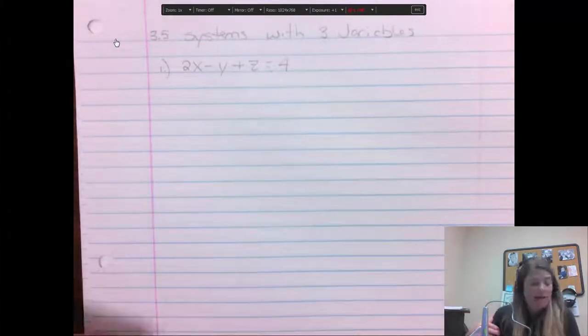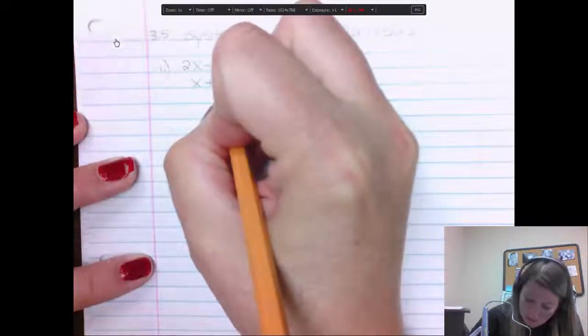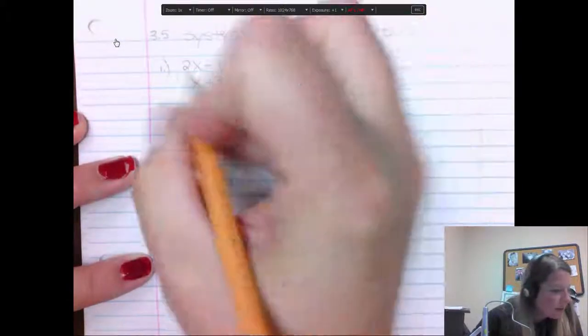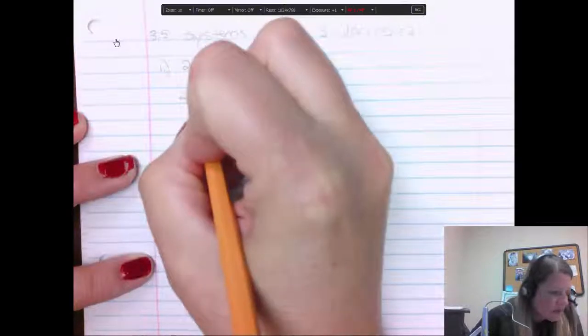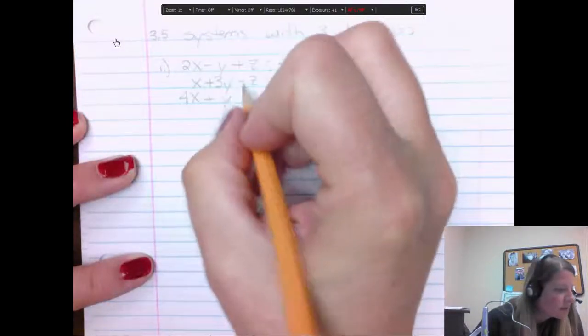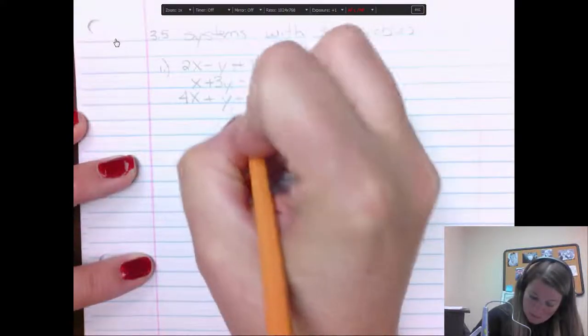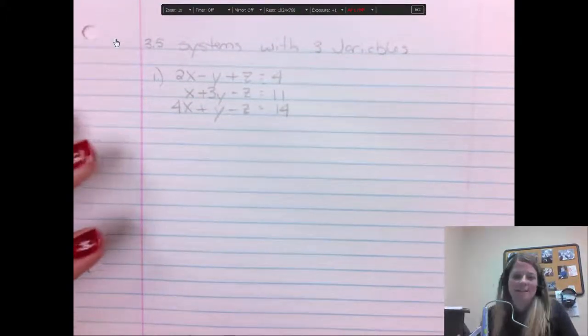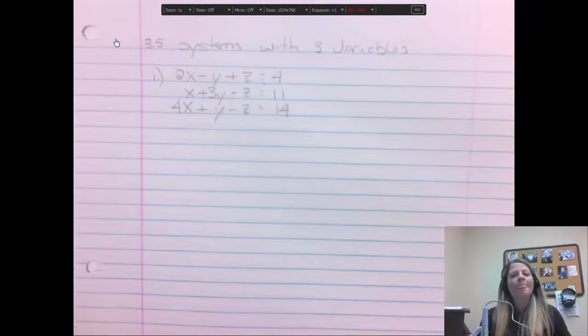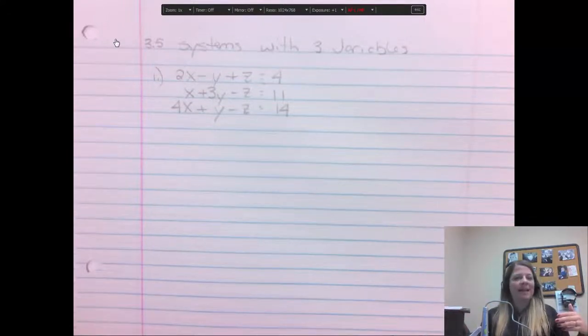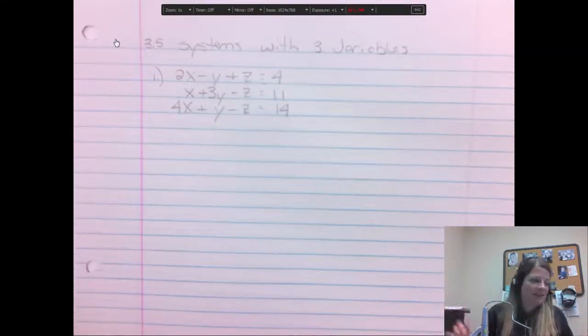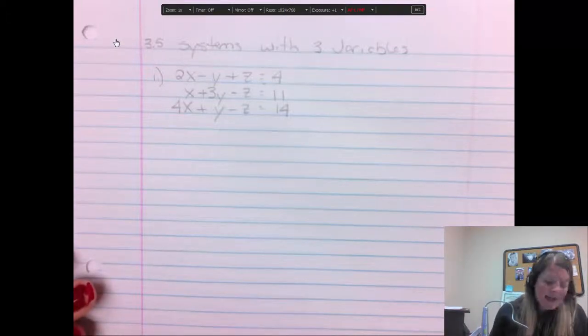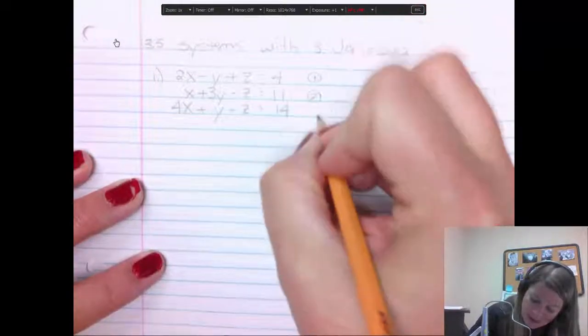So three variables, then you have three equations. Here's your first one. x plus 3y minus z equals 11. And my last one is 4x plus y minus z. And this one's like an easier one, so I'll do an easier one and a harder one. So what I first do is I have x, y, and z. I can't solve the three together.